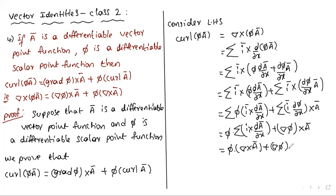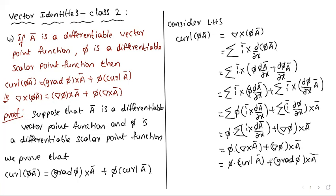That equals π into del cross Ā, which is curl(Ā), plus del(π) cross Ā, which is grad(π) cross Ā. This equals the right-hand side. Hence proved.